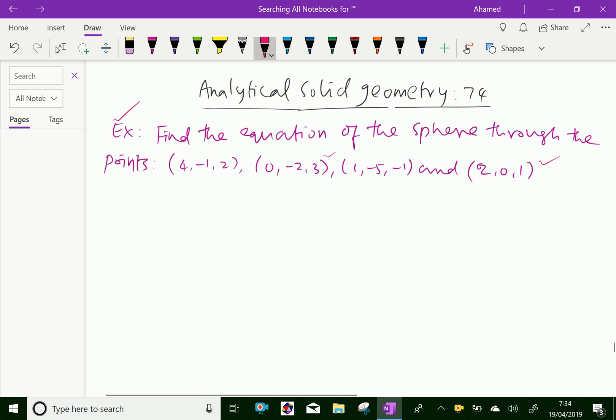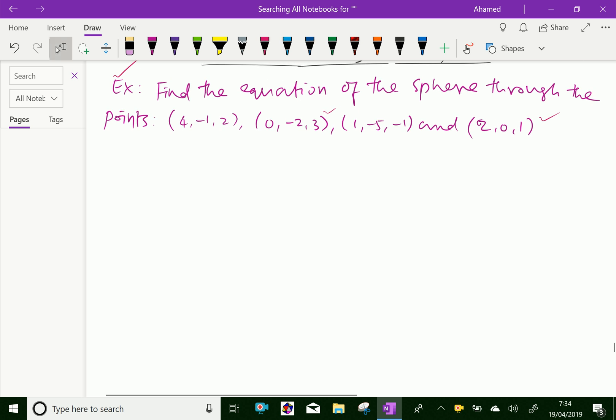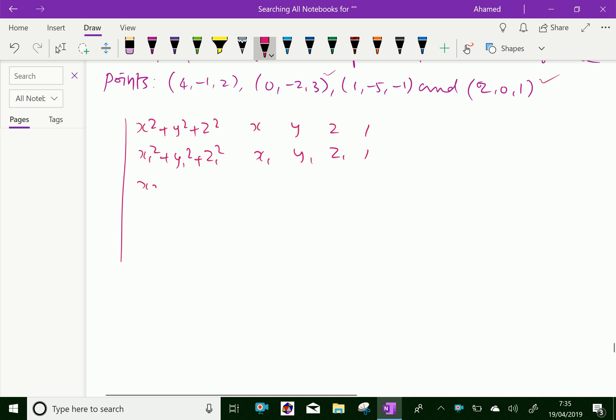We know that equation of the sphere through 4 points in determinant form is like: x² + y² + z², x, y, z, 1; x₁² + y₁² + z₁², x₁, y₁, z₁, 1; x₂² + y₂² + z₂², x₂, y₂, z₂, 1.